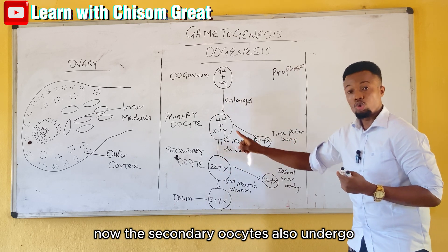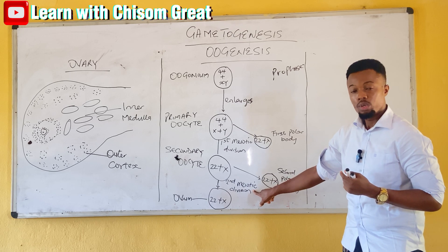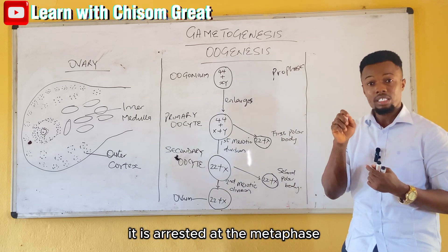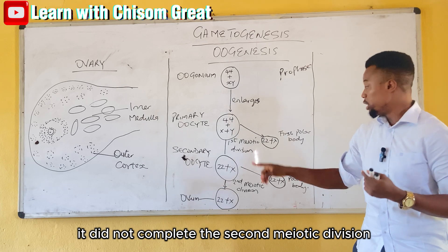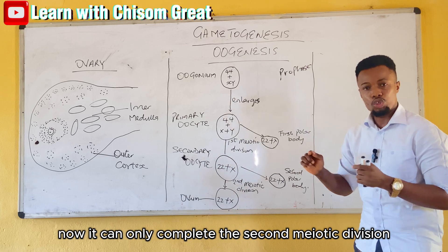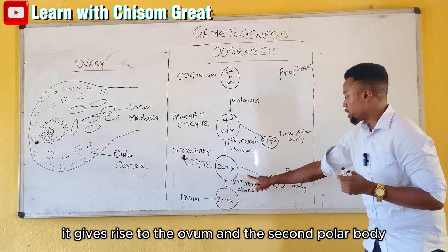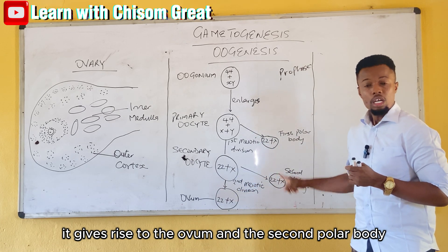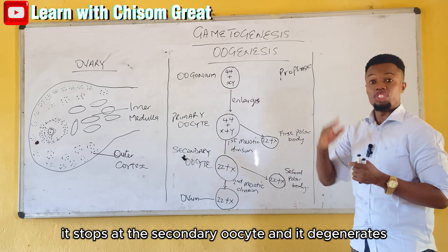The secondary oocyte also undergoes the second meiotic division, but it is arrested at the metaphase stage — it did not complete the second meiotic division. It can only complete the second meiotic division if fertilization occurs. If fertilization occurs, it gives rise to the ovum and the second polar body. But if fertilization does not occur, it stops at the secondary oocyte and degenerates.